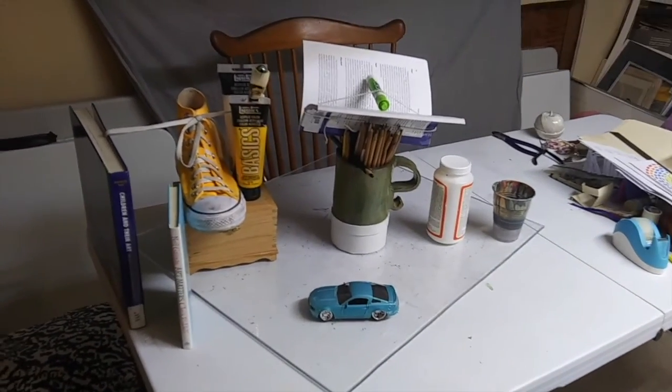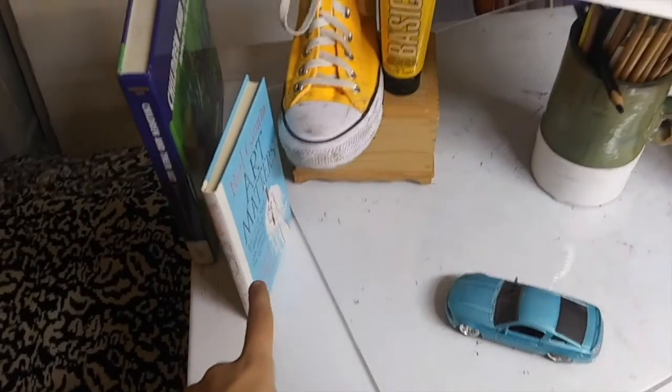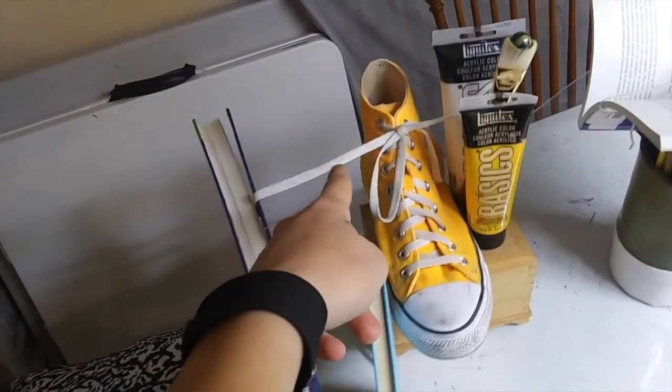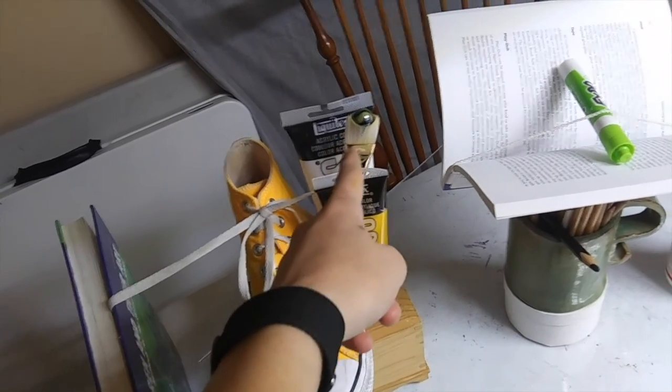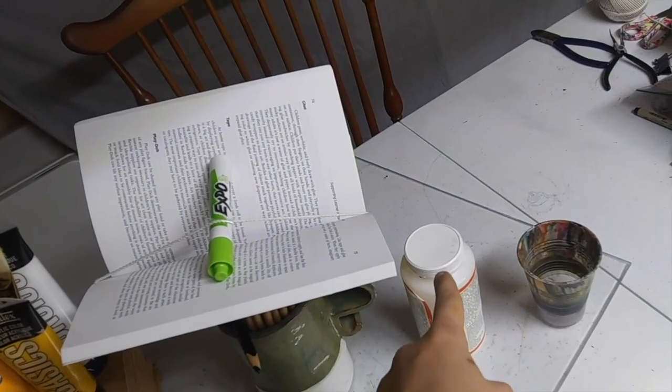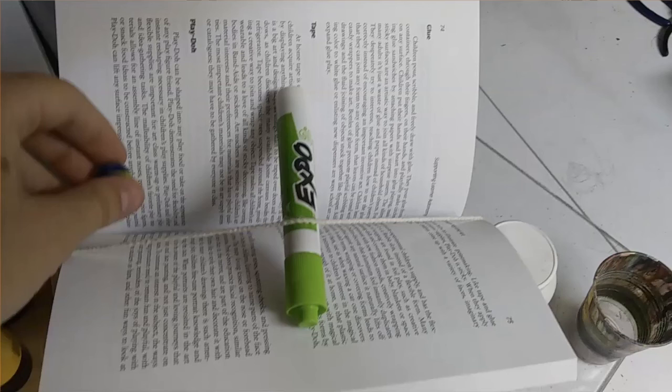As you can see here, I've got my Rube Goldberg machine all rigged up. The plan is, this car is going to roll into these books, and they're going to knock each other over. This one will fall off the table and pull the shoelace, which will loosen that shoelace and make this paintbrush tip over, and the marble will roll down this chute, bounce off the cap of that bottle, and land in this cup. Next, we're going to take a look at how I had to use some problem solving to get through making the example for you guys, and also how that factors into the repeat step of the engineering and design process.